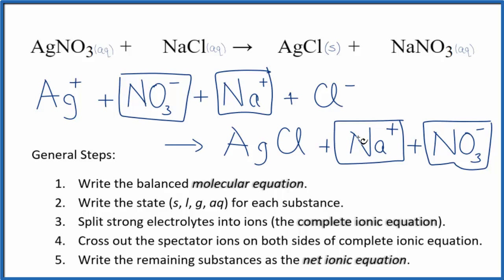Those are the spectator ions. You can think about it this way. You start the reaction out, and you have sodium ions and nitrate ions in your beaker. Once the reaction takes place in that same beaker, you still have sodium and nitrate ions. They haven't changed. We're not interested in those. We get rid of those. That gives us our net ionic equation.